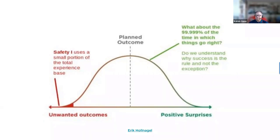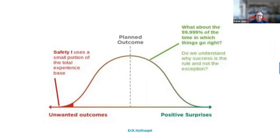His proposition was that we need to think about the other side of the curve. Firstly, mostly things do go as intended or planned in the system. More than 99.99% of the time, things are going right. So the proposition was: shouldn't we be thinking more about how things go right rather than how they go wrong?